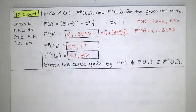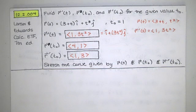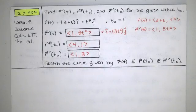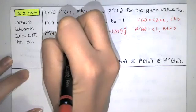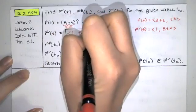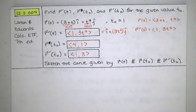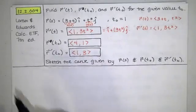And then we're asked to sketch the curve given by r of t along with r of 1 and r prime of 1. So first what I would do to sketch the curve is I would write down the parametric equations for this curve. So this is x of t and this is y of t. And then I would try to eliminate the parameters so that I can draw this curve in the same way that I would have drawn it just in the xy plane without a parameter t.